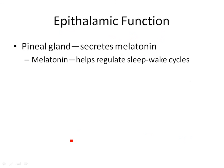Last but not least in the diencephalon, you have the epithalamus. The main thing to take away from the epithalamus is that this is where the pineal gland is — you'll talk about it again in 202. It makes melatonin — not melanin, which has to do with skin pigment — melatonin, which we use to help regulate our sleep-wake cycles.